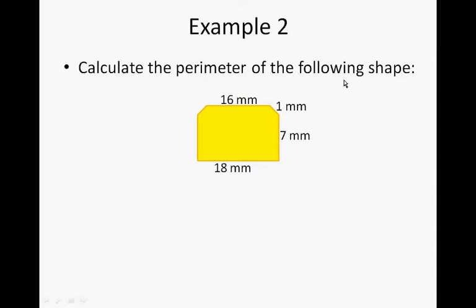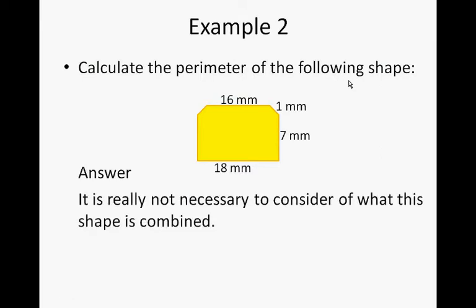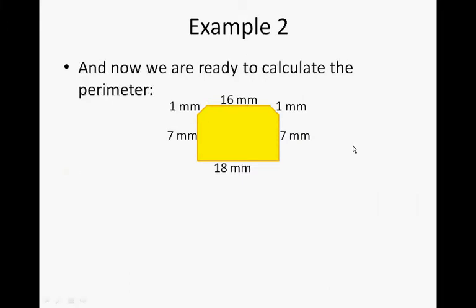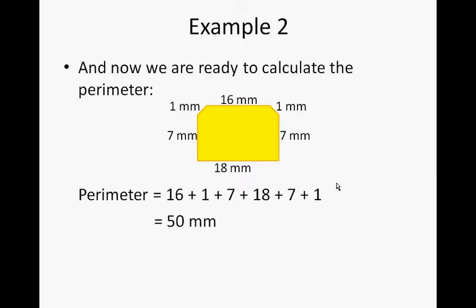Calculate the perimeter of the following shape. It's not really necessary to consider what this shape is combined of. We only need to find the missing lengths. If that's 7, this should be 7 too. And if this is 1, we can see there's symmetry in this shape. That is 1 too. And now we're ready to calculate the perimeter: 16 plus 1 plus 7 plus 18 plus 7 plus 1 gives us 50 mm.